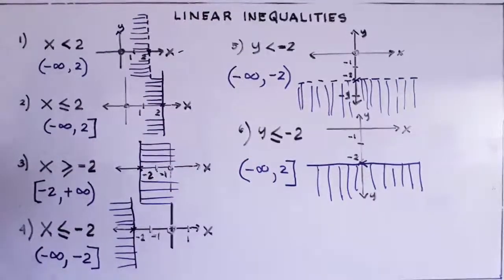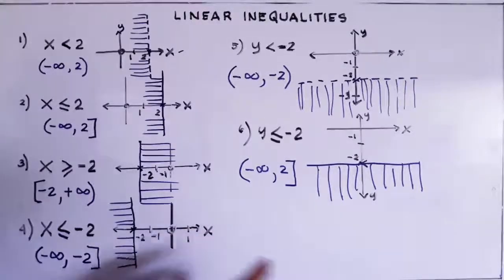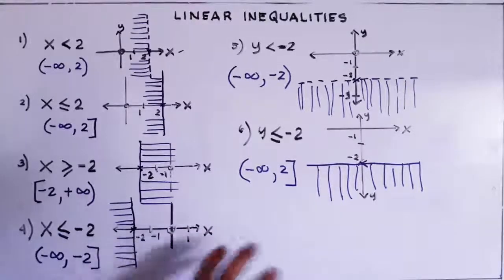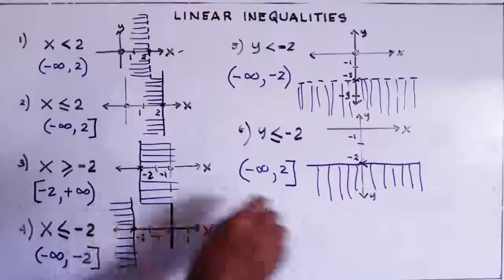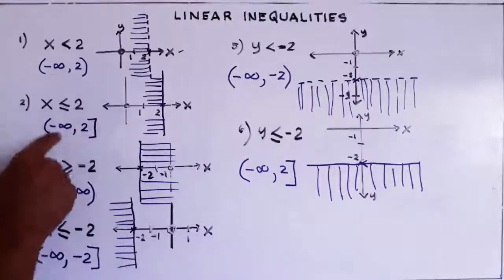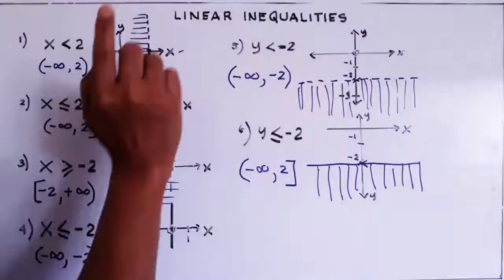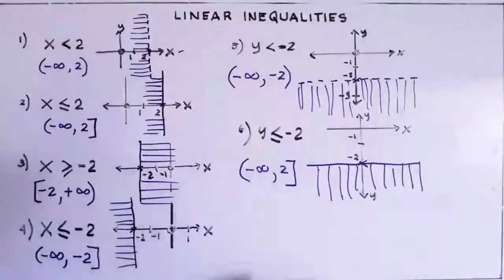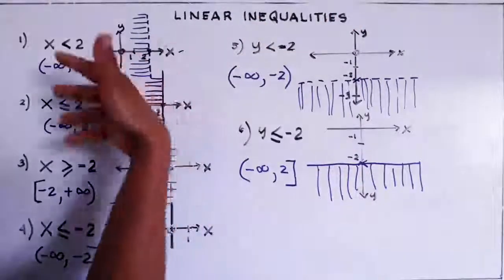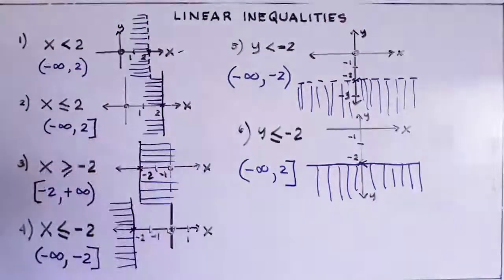When we are doing the regions of linear inequalities with two or more inequalities, you don't need the interval notation anymore. You only shade each inequality, and then the intersection of the shaded portions will be true for all the values of our linear inequalities.